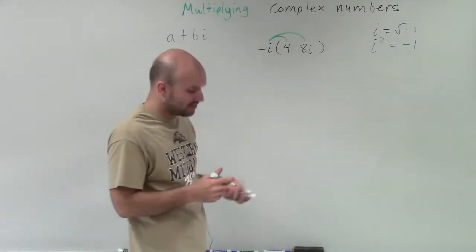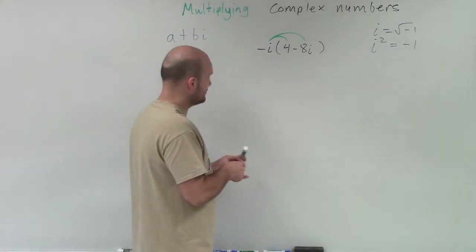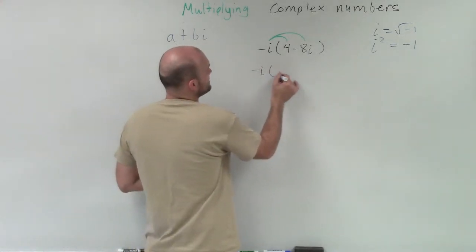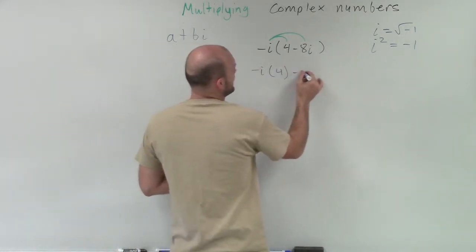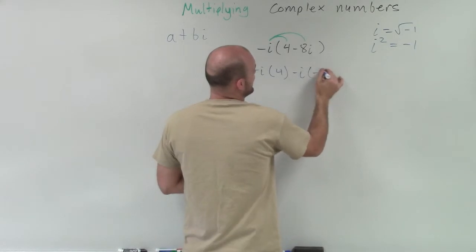By applying distributive property, what we see here is that negative i is going to be multiplied by 4. And then, negative i is going to be multiplied by negative 8i.